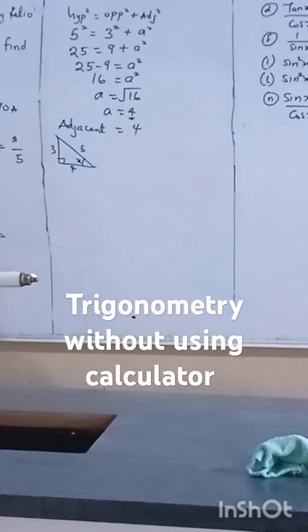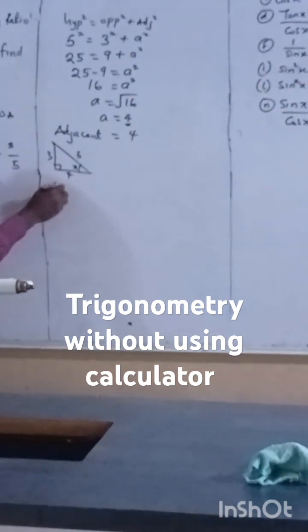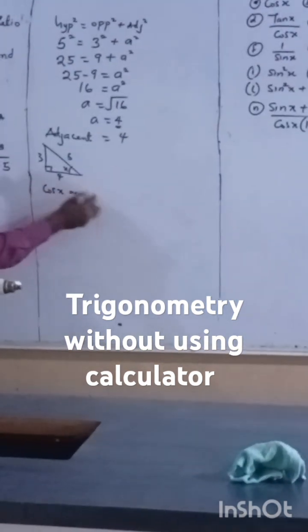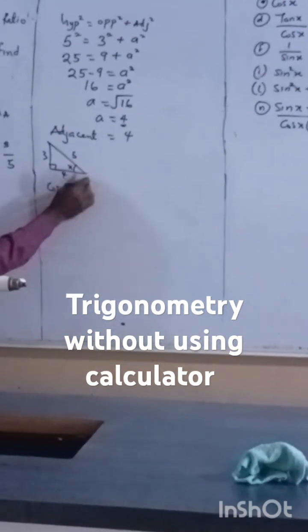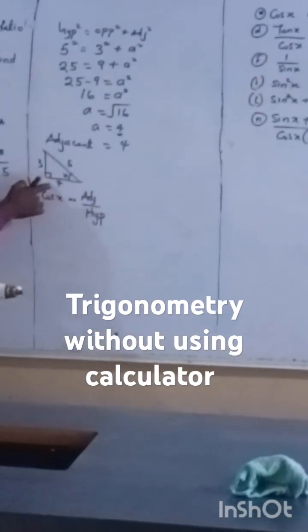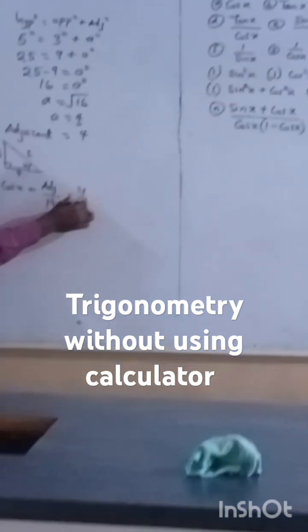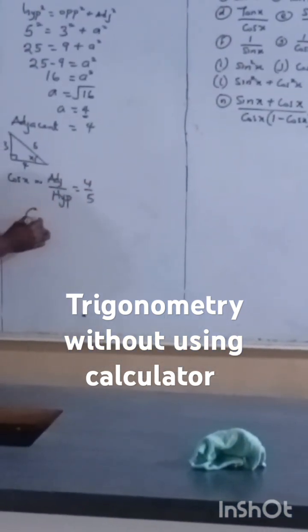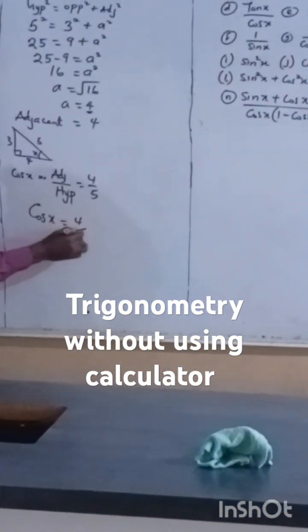To find cos x: cosine equals adjacent over hypotenuse. My adjacent is 4, my hypotenuse is 5. Finally, cos x equals 4/5.